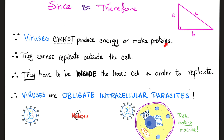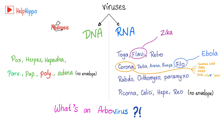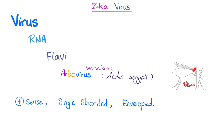Since viruses cannot produce their own energy or make their own proteins, they have to hijack you. They are obligate intracellular particles and in that sense they are considered parasites. Today we're talking about Zika virus, which is a Flavivirus. The word 'Arbovirus' is not a taxonomic classification — it literally means arthropod-borne virus. Any virus that is arthropod-borne can be called an Arbovirus. The mosquito that transmits Zika virus is called Aedes aegypti. Zika is a positive-sense, single-stranded RNA virus with an envelope.